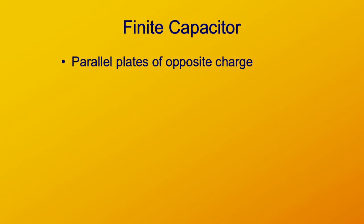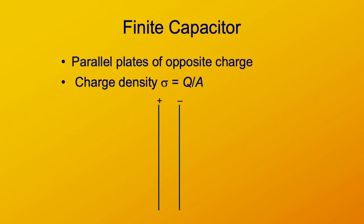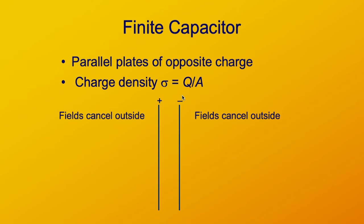The capacitor is constructed of parallel plates with opposite charges, a plus and a minus. The charge density is the charge per area on the two plates. The positive plate has a charge density of plus sigma, and the negative plate has a charge density of minus sigma. Outside, there's no electric field. Inside, the electric field between the plates has a strength of sigma over epsilon naught, and that's a uniform field.